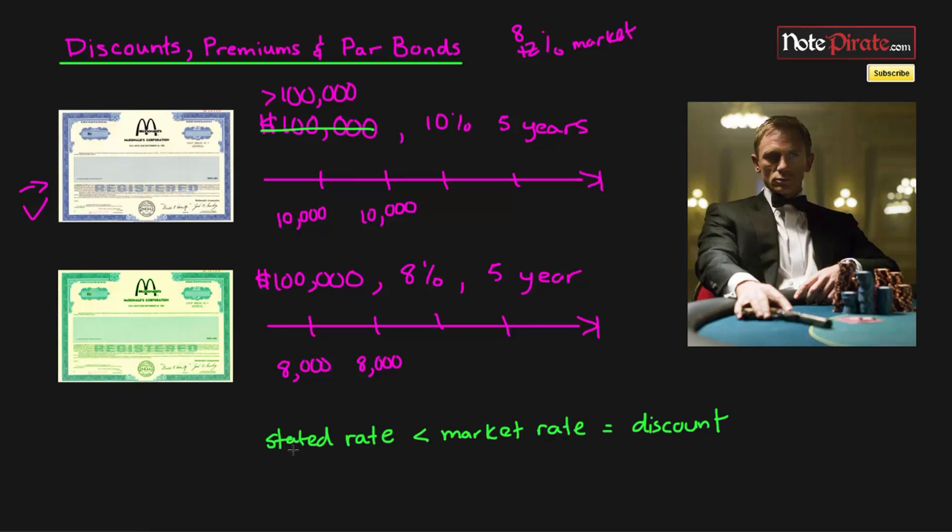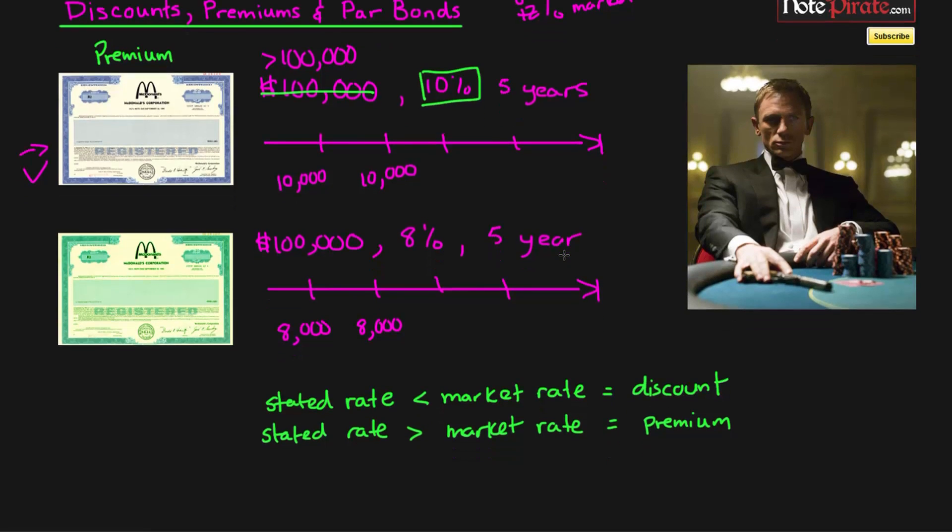So my second point is that this bond will be trading at a premium. So when the stated rate, which you can see here is 10%, is greater than the market rate, which it is because the market rate is 8% on similar instruments, then it's going to be trading at a premium because more people want this 10% bond. Therefore, they need to raise the price to cover the demand for it. So that's how discounts and premiums work.